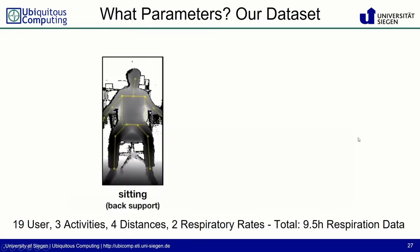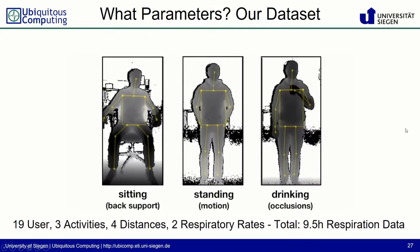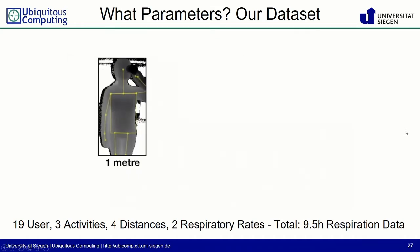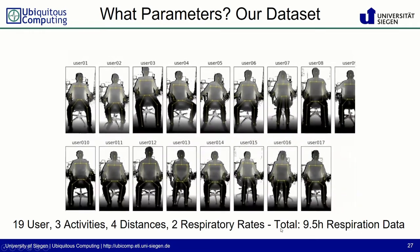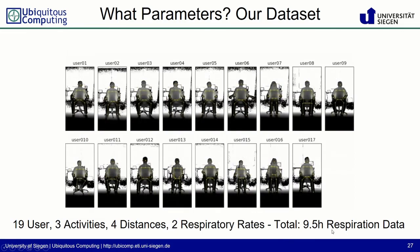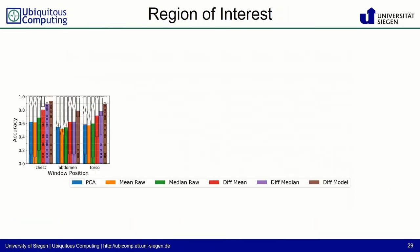For the evaluation, we recorded a dataset of 19 users, 3 activities — sitting, standing, and drinking — at 4 distances of 1, 2, 3, and 4 meters, with 2 respiratory rates, totaling 9.5 hours of respiration data. One very important parameter is the region of interest: the chest, the abdomen, or the torso. We compare the PCA of the region, the mean or median, the same with motion subtraction, and our model-based approach.